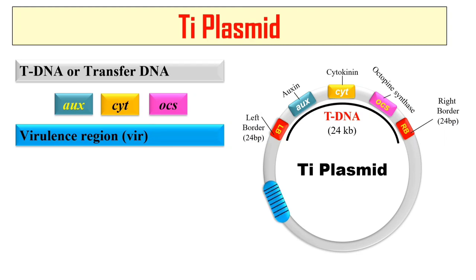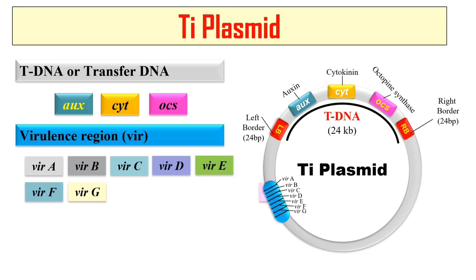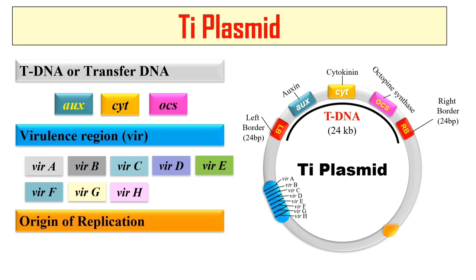The next element present in the Ti plasmid is the vir region, that is the virulence region. This virulence region consists of eight operons from vir A to vir H — vir A, vir B, vir C, vir D, vir E, vir F, vir G, and vir H. This virulence region helps in the transfer of T-DNA to the plant. Only T-DNA is transferred to the plant, but it requires the help of this virulence region from vir A to vir H.